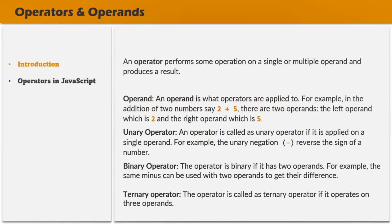Basically, an operator performs some operation on a single or multiple operands, and it produces a result. An operand is what operators are applied to. For example, when we try to add 2 and 5, the plus is an operator, and this operator is operating on two operands — the left operand, which is 2, and the right operand, which is 5.